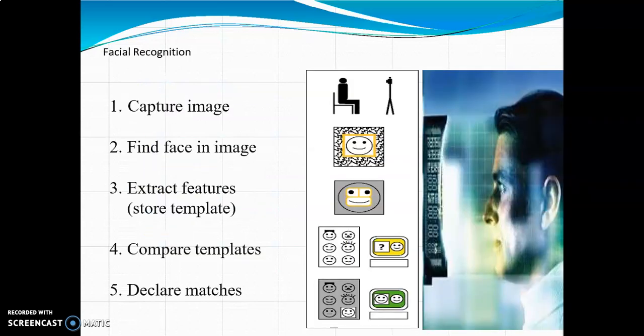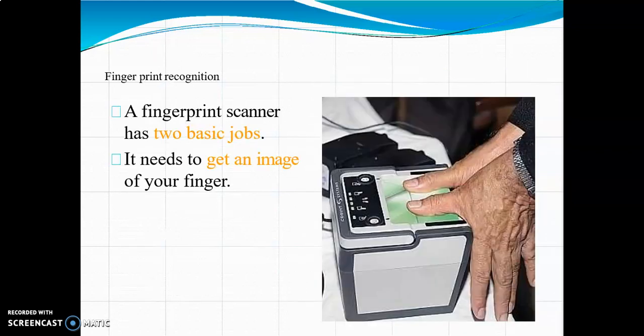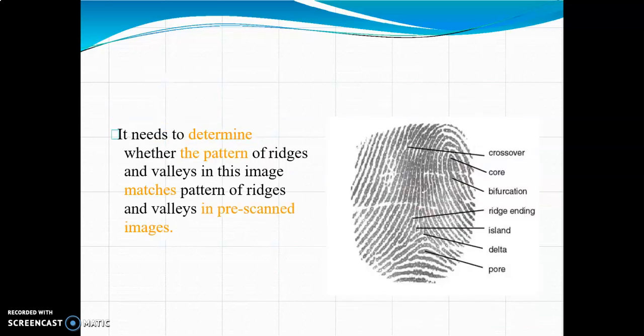For facial recognition, the system first captures the image, finds the face in the image, extracts the features, stores them in a template, compares templates, and declares the match. For fingerprint recognition, a fingerprint scanner has two basic jobs: it needs to get an image of your finger and determine whether the pattern of ridges and valleys matches the pre-scanned image.